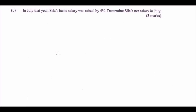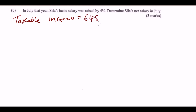Now for part B of the question. In July of that year, Sira's basic salary was raised by four percent. We need to determine Sira's net salary in July. We recall the taxable income was sixty-four thousand eight hundred.